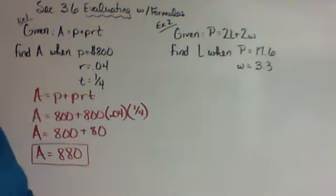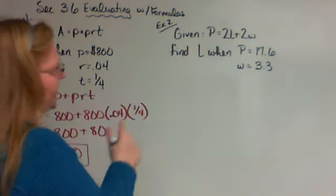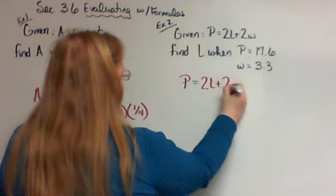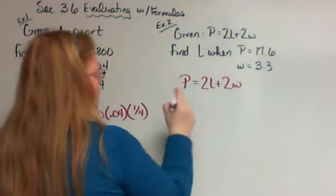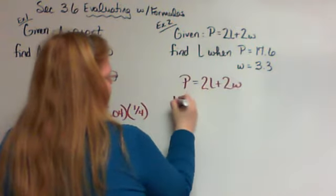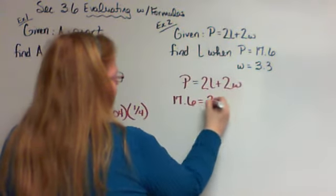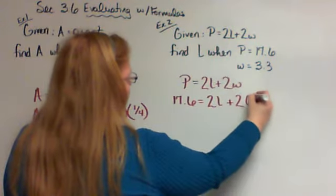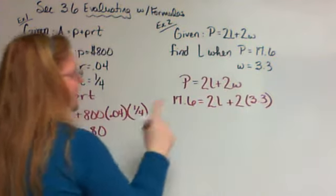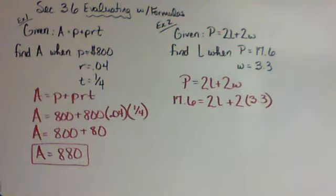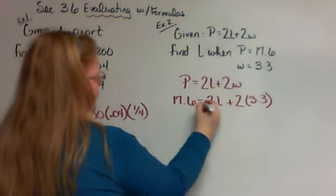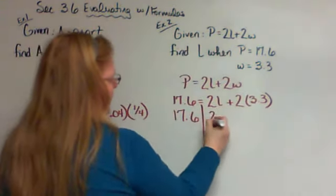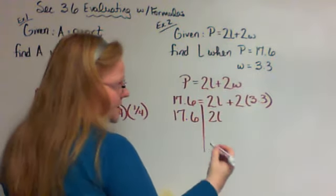The second one was much more challenging. This time they gave you a formula - that was nice of them. They told you what P was, they didn't tell you what L was, they did tell you what W was. Remember, if there's nothing between them it's multiplication. So on this side I get 17.6 equals 2L plus 2 times 3.3 is 6.6.